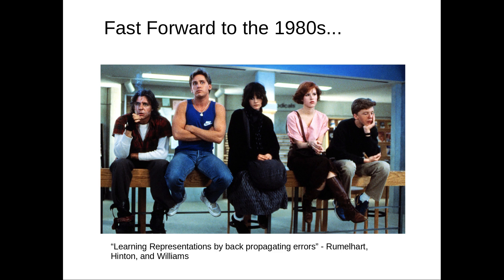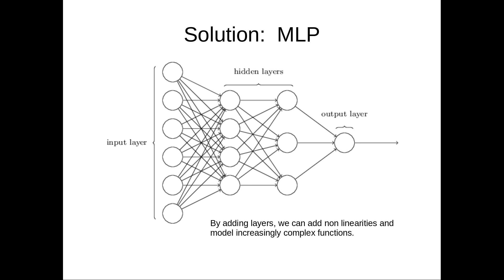This is called a multi-layer perceptron. What we have here is multiple layers of neurons stacked on top of one another. You'll have an input layer, then one or more hidden layers, and an output layer. By adding these layers, what it lets us do is insert nonlinearities.